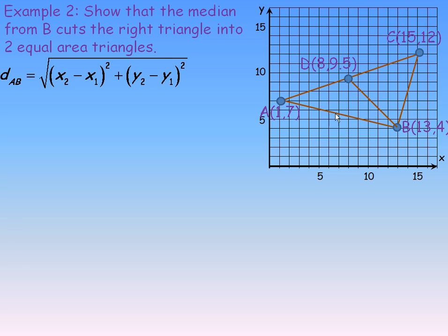So, first of all, finding the base of the ADB triangle, I'll find the length from A to B using the coordinates 1, 7, and 13, 4. And so underneath the root here, we will go 13 minus 1 squared, and 4, take away the 7, squared as well. So, 13 minus 1 is 12, and 12 squared is 144. 4 minus 7 is negative 3, and negative 3 squared is 9.